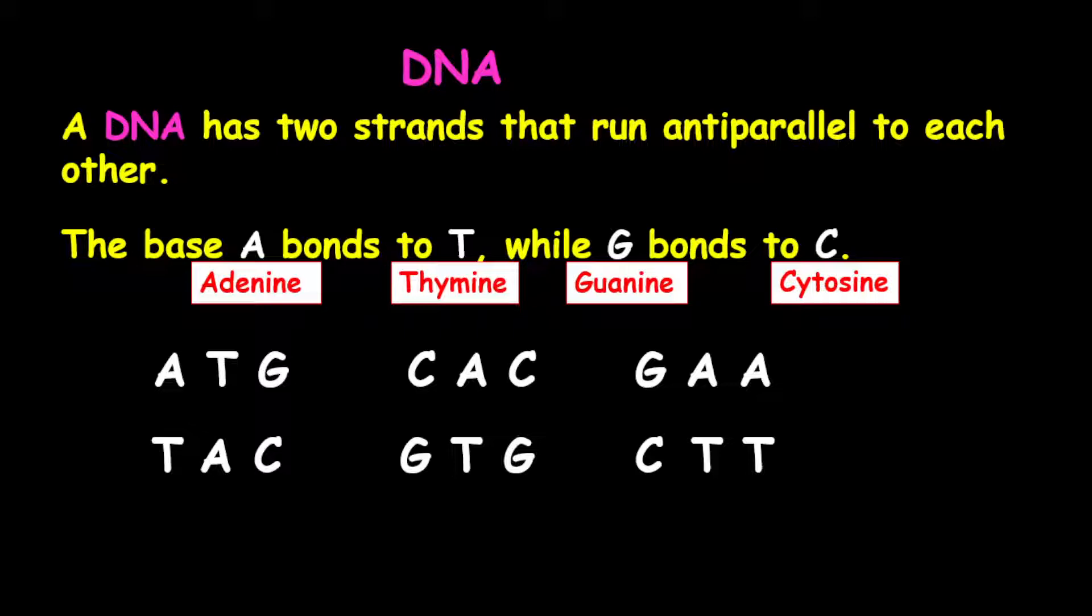Now, remember that they run anti-parallel to each other. So, therefore, if the top strand runs from 3 prime to 5 prime, then the bottom strand or the complementary strand must run from 5 prime to 3 prime. Now, we have a very short portion of our DNA structure.